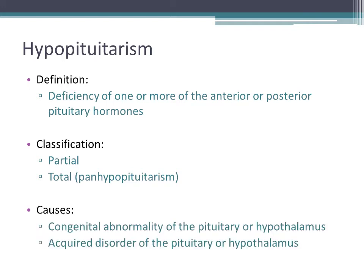The causes for hypopituitarism are many, but they can be broadly classified into congenital abnormalities of the pituitary or hypothalamus, or acquired disorders of the pituitary or hypothalamus.